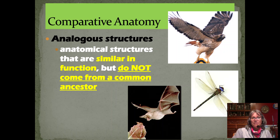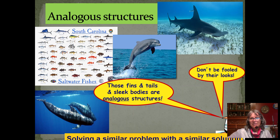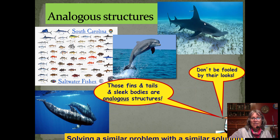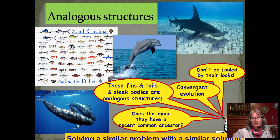We could also have analogous structures — anatomical structures that are similar in function but don't come from a common ancestor. They have different development and different anatomy. For example, the fins, tails, and sleek body shape between whales, dolphins, and sharks is an example of convergent evolution. They have the same problem: what's the most efficient way to swim? Mammals have a horizontal fin structure, fish have vertical fins — they do differ, but they're using those fins and body shapes for the same thing: efficient hydrodynamic movement through water.